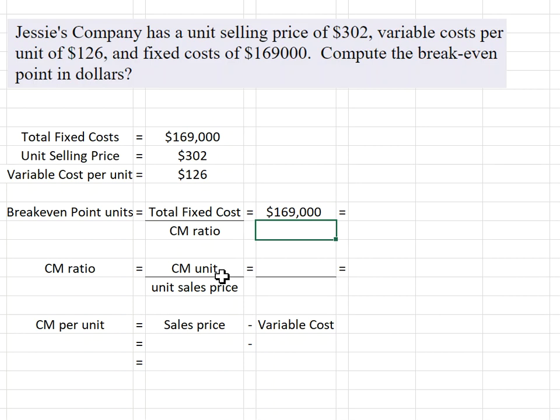Well, I'm not given that. I have to calculate that. How do we calculate contribution margin ratio? Take the contribution margin per unit and divide it by the unit sales price.